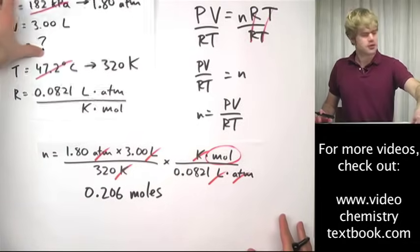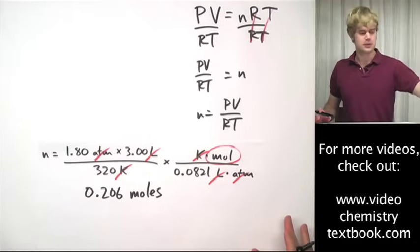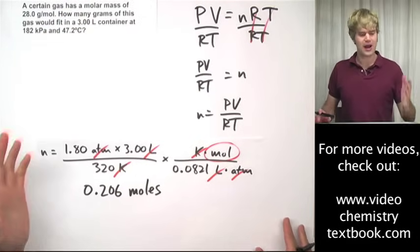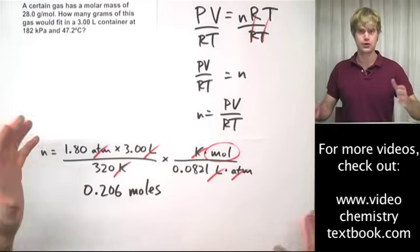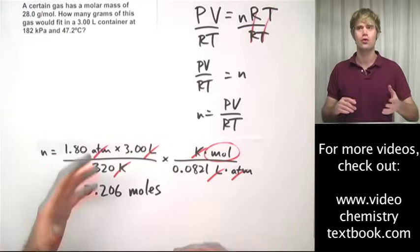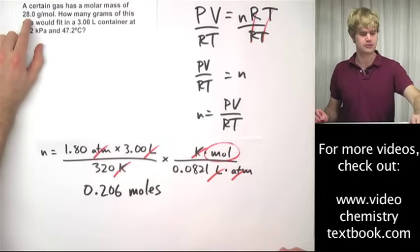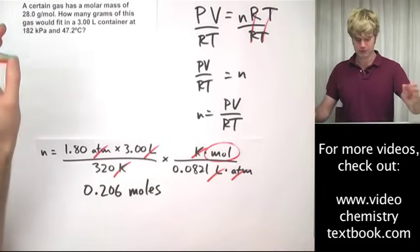But we're not done with the problem yet because if you see here, we're solving for grams, not for moles. So how do we go from moles to grams? We use molar mass. We know that this gas has a molar mass of 28 grams per mole.